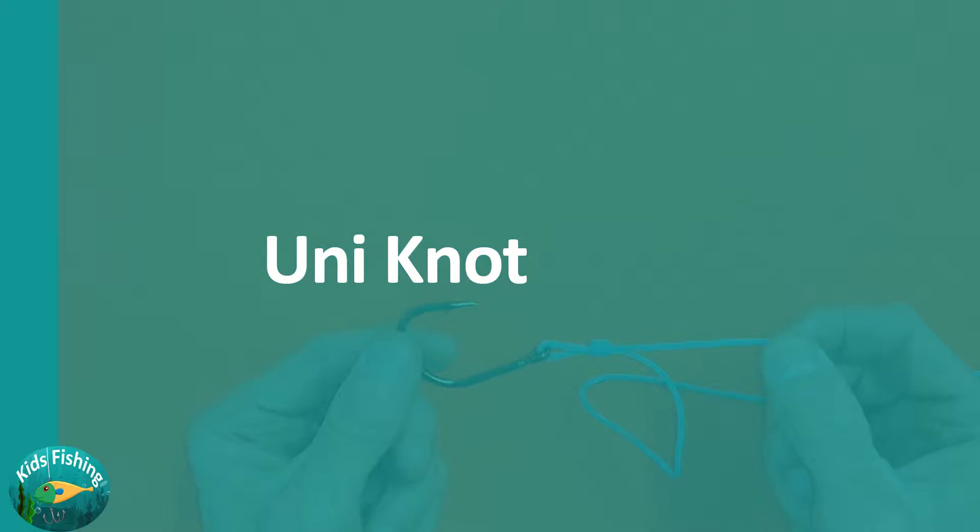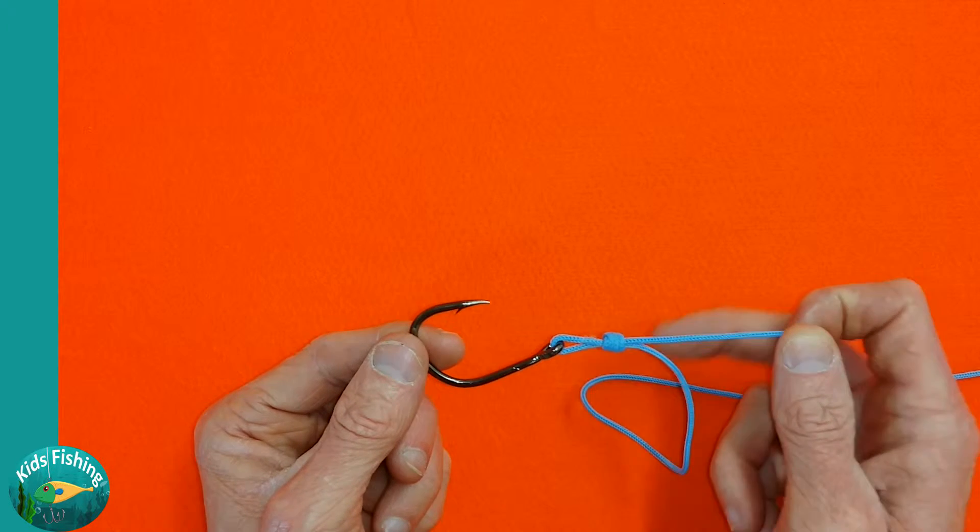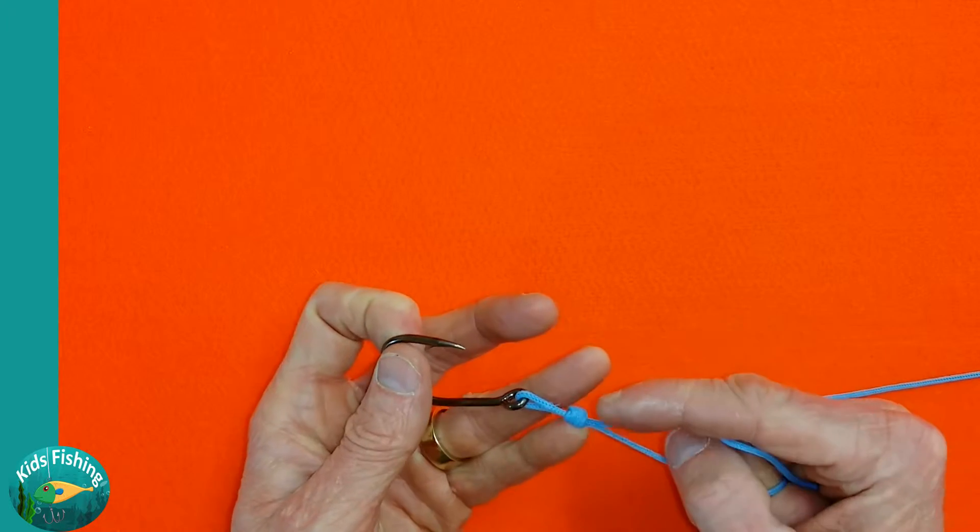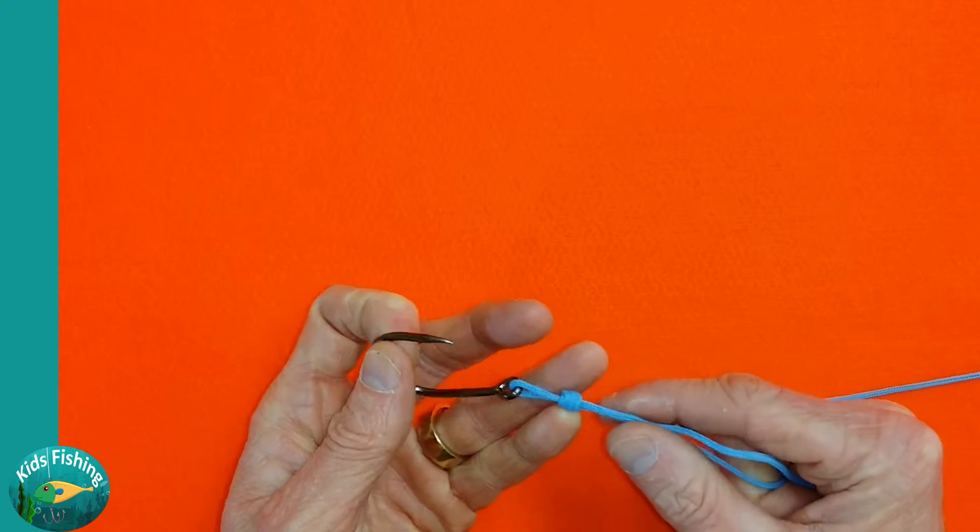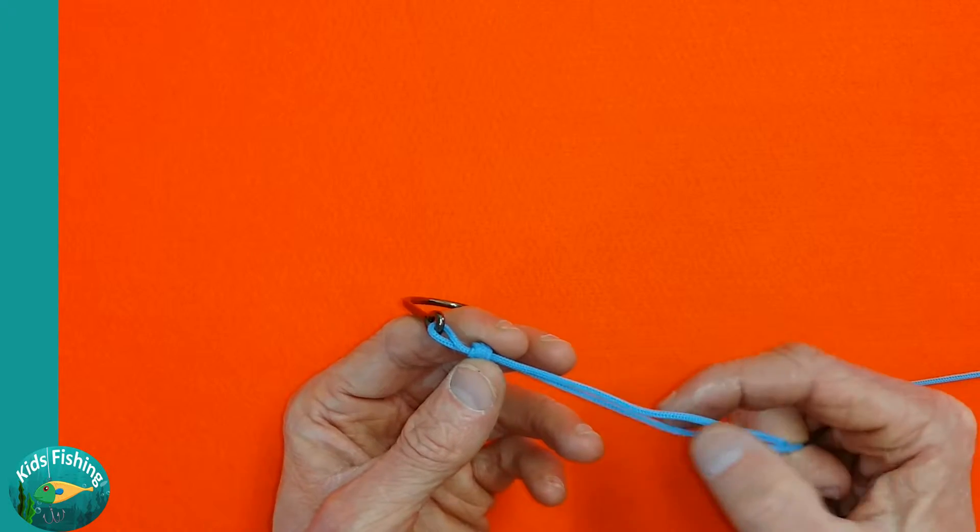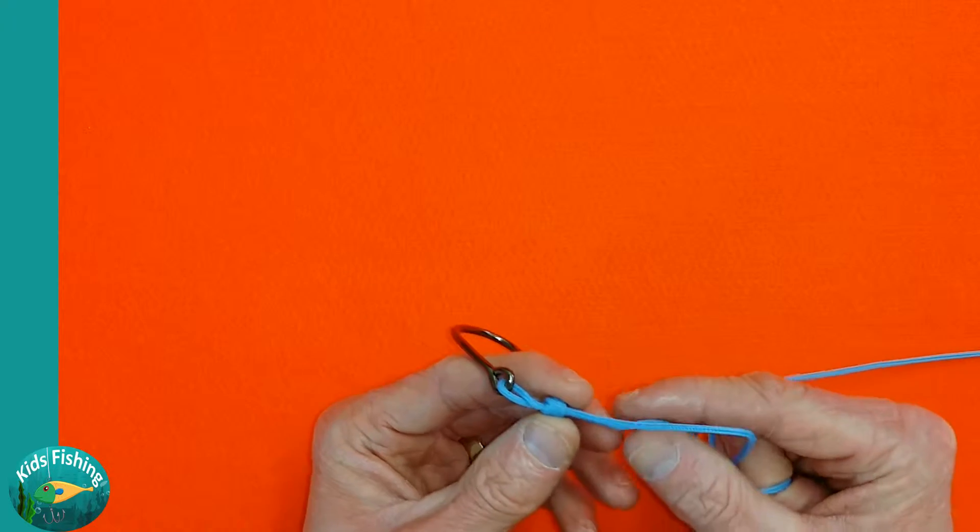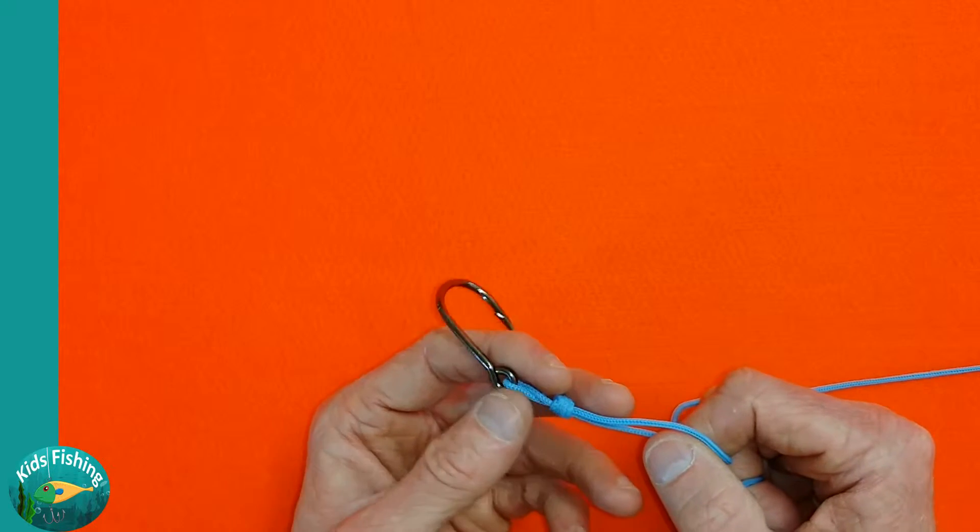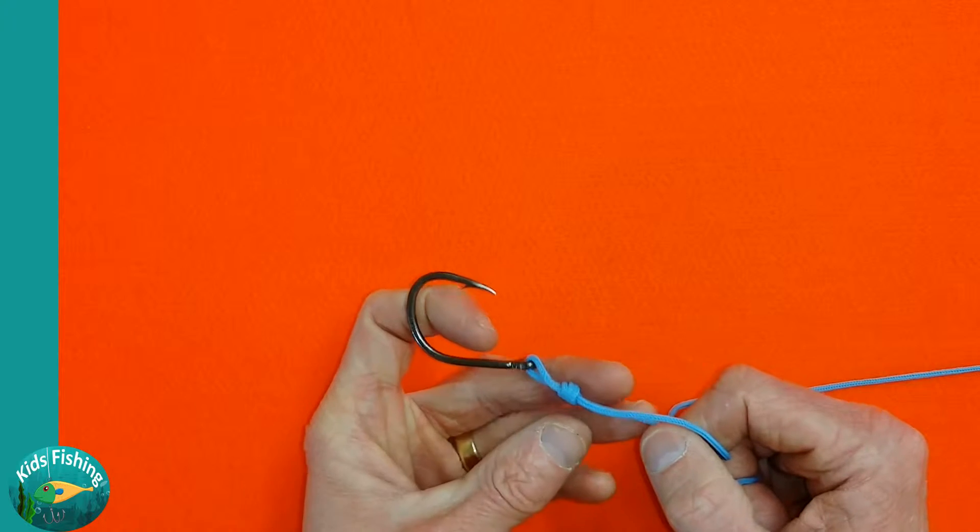Here we have the uni knot. The uni knot in a way is similar to a surgeon's knot because it wraps around the line, and the advantage of the wrap is that it retains its strength. Rather than creating a crossover knot which has the potential to reduce the breaking strain of the line, the uni knot wraps around the line.